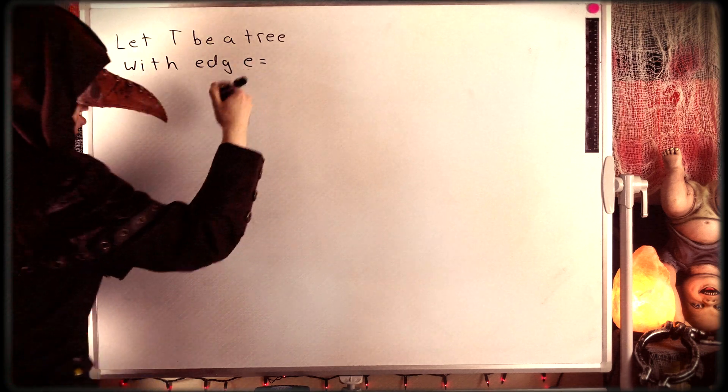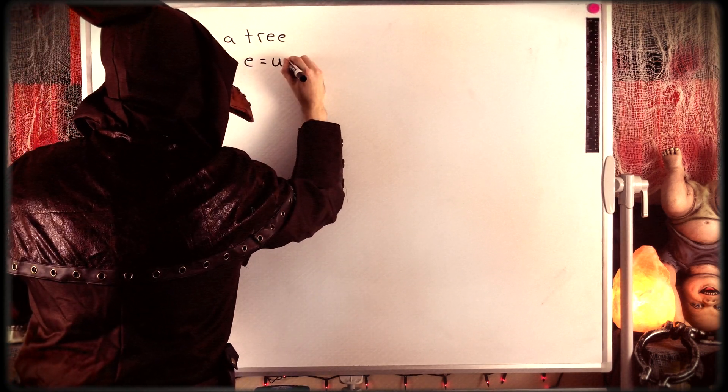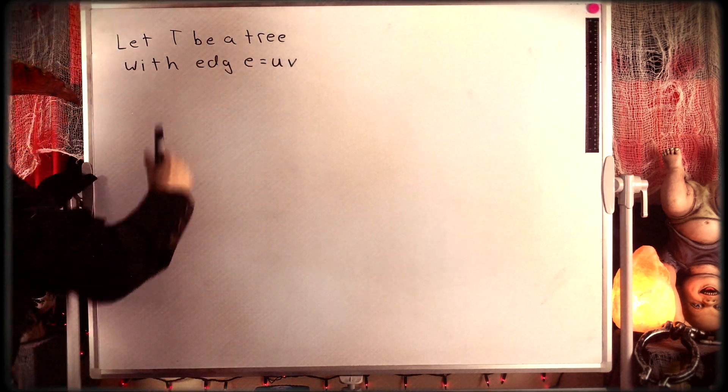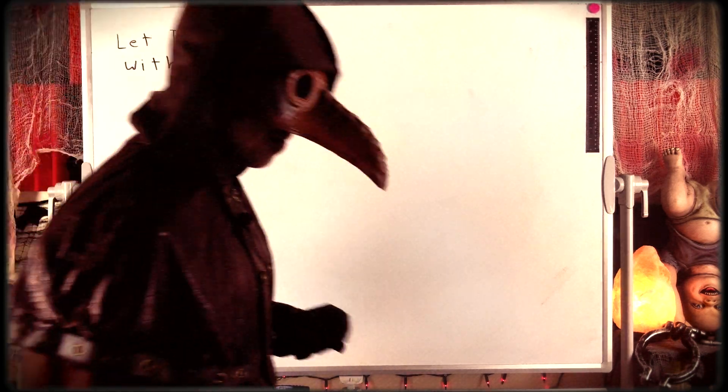So we'll say: let T be a tree with some edge E. We'll say that edge E joins the vertices U and V, so U and V are the end vertices of E.